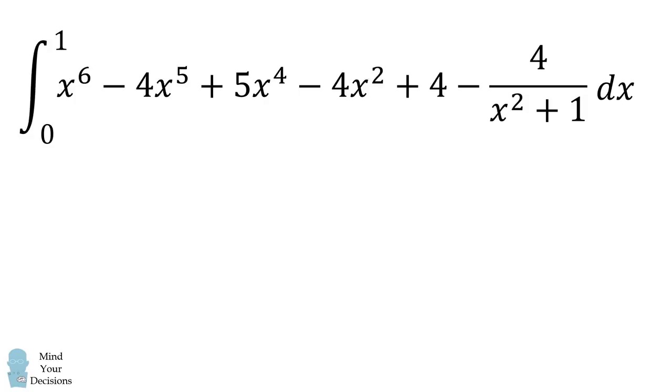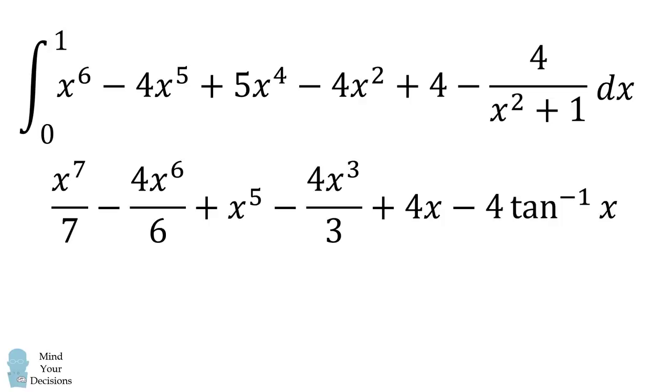We will calculate the antiderivative of each term. So this is fairly straightforward. For x to the power of 6, we get x to the power of 7 over 7. Then we subtract 4 over 6 multiplied by x to the power of 6. Then we have plus x to the power of 5 minus 4 over 3 multiplied by x to the power of 3 plus 4x. The final one will be a little bit tricky. It's equal to negative 4 multiplied by the arctangent of x.